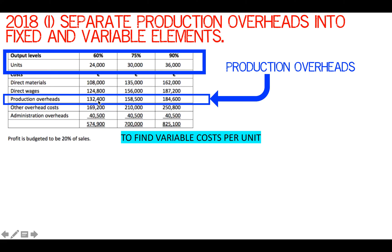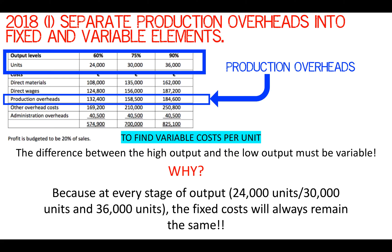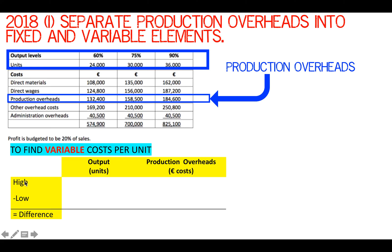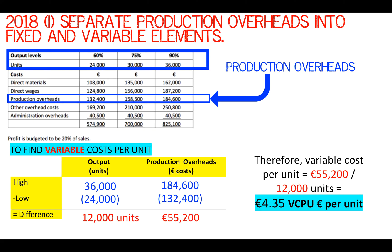At 24,000 units, the production overhead costs 132,400. At 30,000 units, it's 158,500. And at 36,000 units, it's 184,600. The difference between the high output of 36,000 and the low of 24,000 must be variable because the fixed costs stay the same regardless of the level of activity. So to find the variable cost using the high-low method: 36,000 minus 24,000 gives a difference of 12,000 units, and 184,600 minus 132,400 is 55,200. Therefore variable cost per unit is 55,200 divided by 12,000 units, which equals 4.35 euro variable cost per unit.